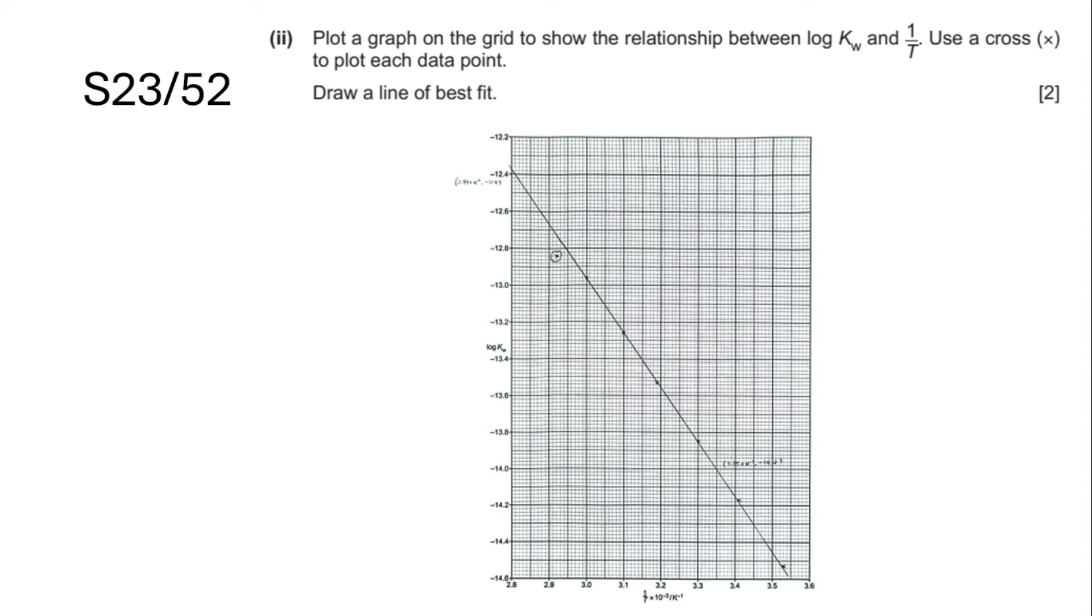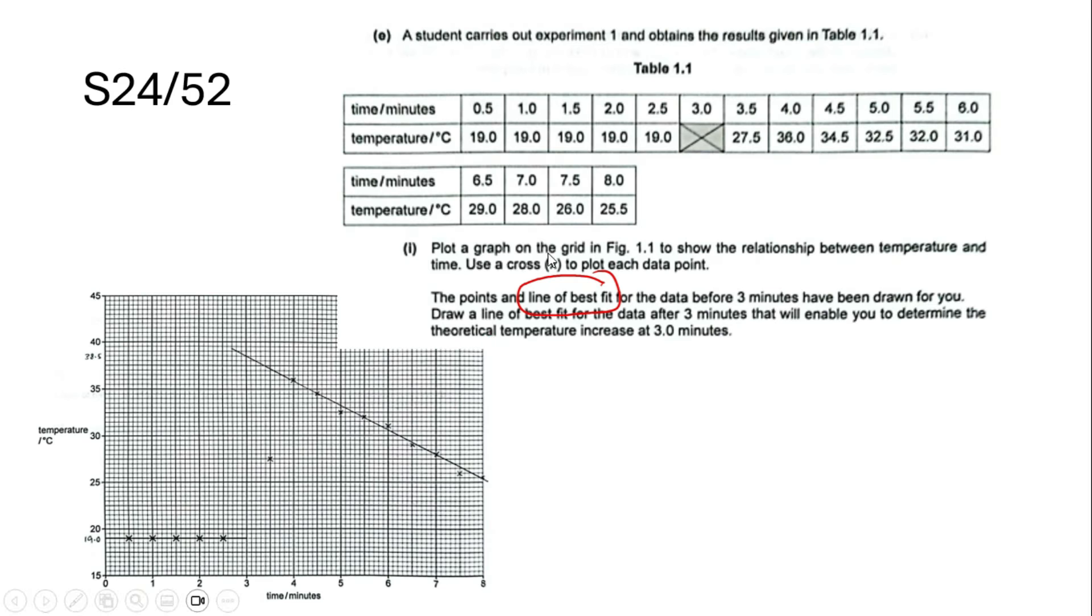Students usually will not have issues with drawing a straight line of best fit because they can just use a ruler to see if a straight line can go through most of the points like this question. So straight line which can go through most of the points, it is a straight line. Now if you have to draw a straight line of best fit and you realize that it doesn't go through most of the points, after you draw your straight line,